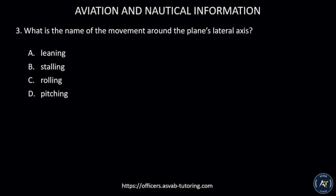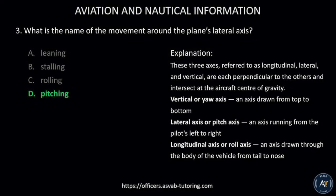Number three: What is the name of the movement around the plane's lateral axis? A) Leaning, B) Stalling, C) Rolling, or D) Pitching. The correct answer is D, pitching. These three axes — longitudinal, lateral, and vertical — are each perpendicular to the others and intersect at the aircraft's center of gravity. The vertical or yaw axis runs from top to bottom, the lateral or pitch axis runs from the pilot's left to right, and the longitudinal or roll axis runs through the body of the vehicle from tail to nose.